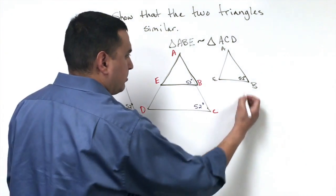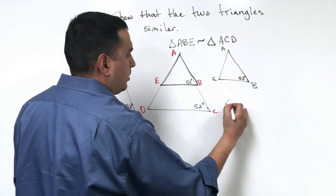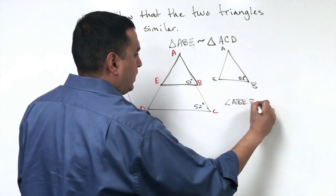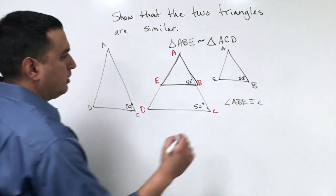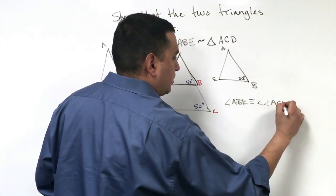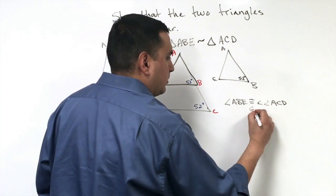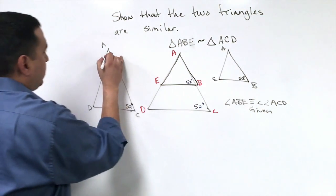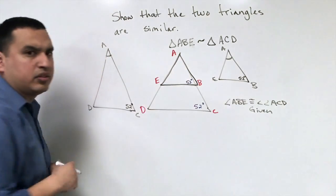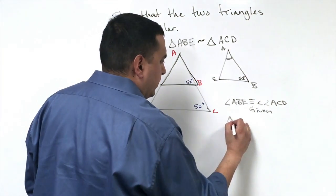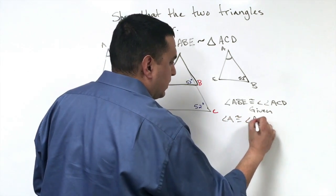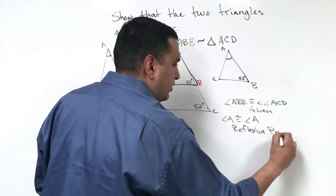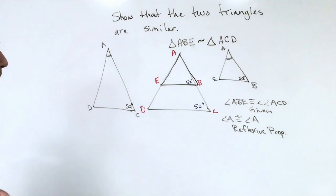So obviously, you could say that angle ABE is congruent to angle ACD, because they're both 52 degrees. Your reason would be because that's given. Now, the reason for separating them is that I could see that I have these two angles up here. They're both angle A. So I would know that angle A obviously is congruent to itself, congruent to angle A. And we would call that the reflexive property of congruence.